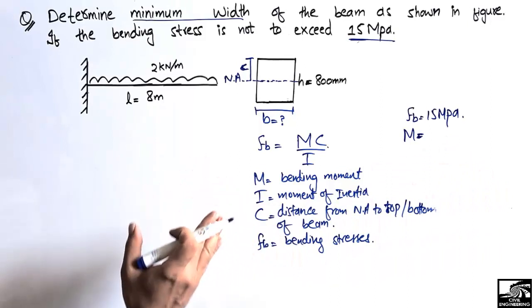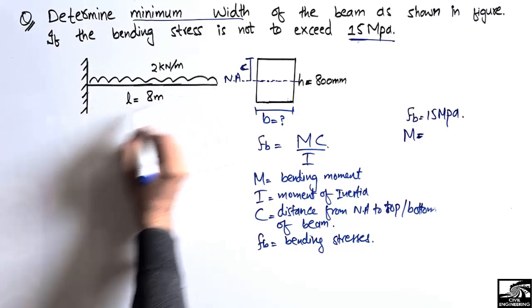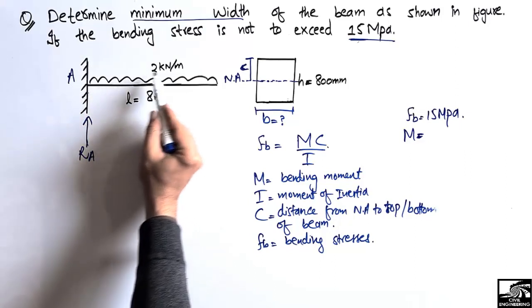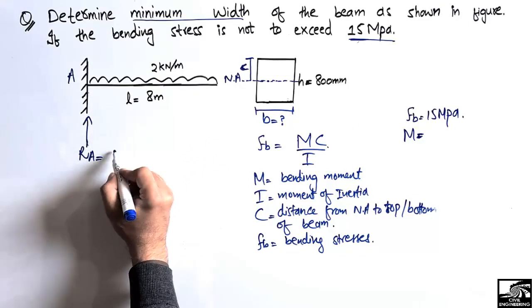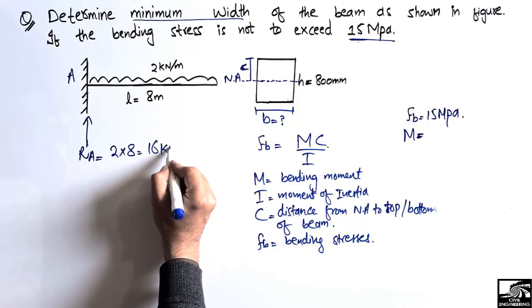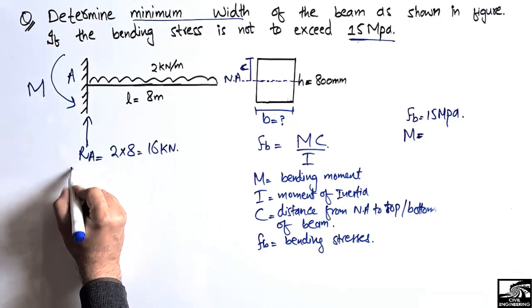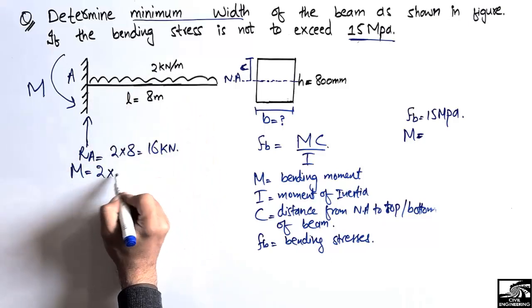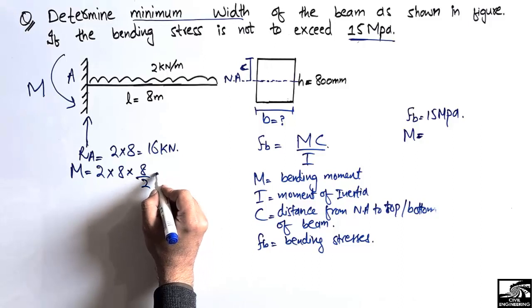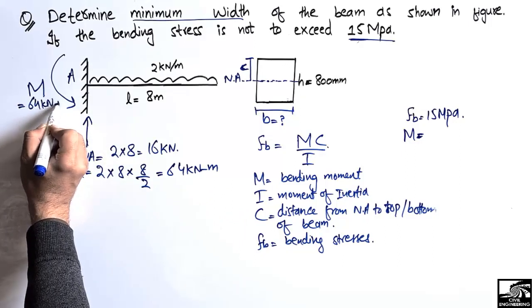In order to find the minimum width of the beam, we have to find the maximum bending moment for this cantilever beam. First we find the support reactions: the total load acting on this beam is Ra = 2 × 8 = 16 kN. The maximum moment is 2 multiplied by 8 multiplied by half of 8, which comes out to be 64 kN·m. So 64 kN·m is the maximum bending moment for this cantilever beam.